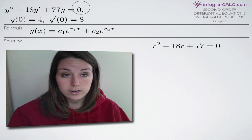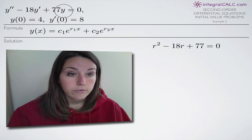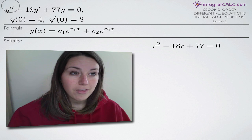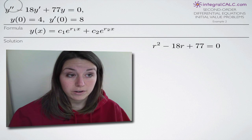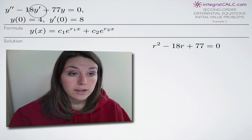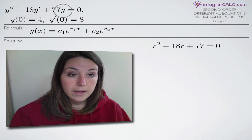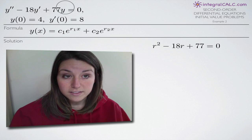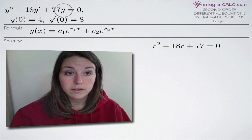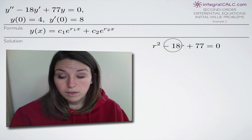The way that we convert our original equation into one that involves r's instead of y's is we replace y with r. The quickest trick is to look at the number of hash marks on the y's. y double prime has two hash marks, so that becomes r squared. 18y prime has one hash mark, so that becomes r. And y with zero hash marks becomes r to the zero, which is one, so we just have 77 without a variable attached.